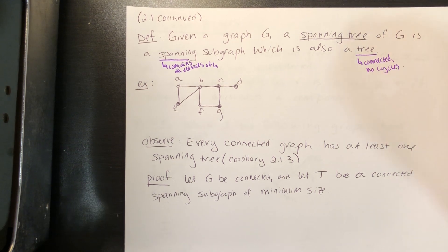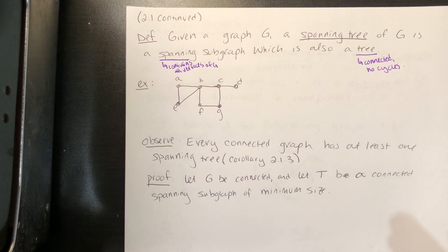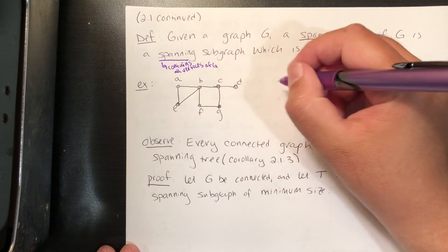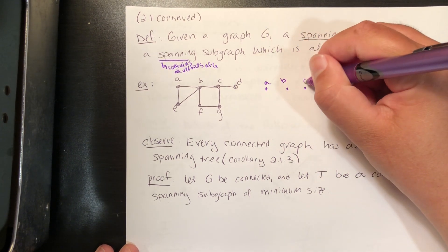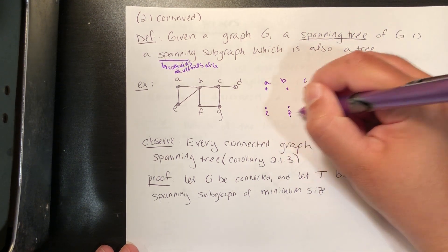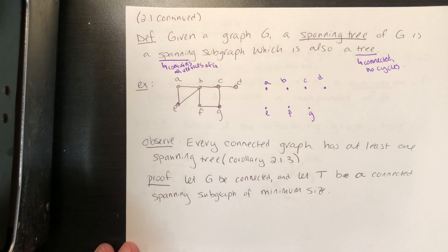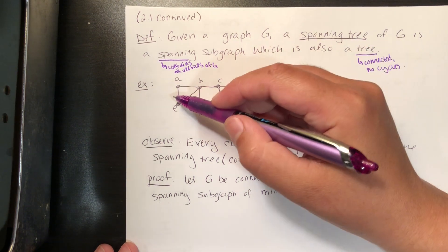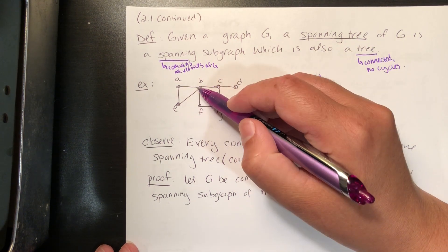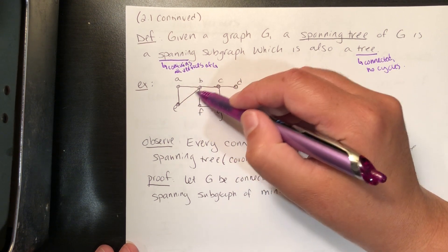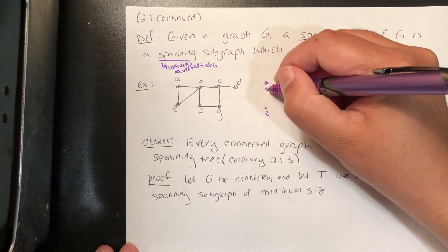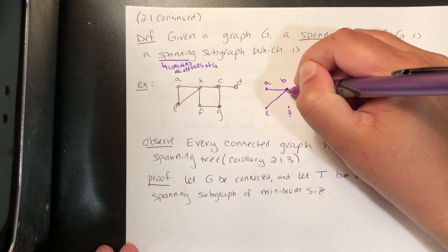As an example, consider this graph. There are lots of different spanning trees of this particular graph. We want to make sure we have all the original vertices a, b, c, d, e, f, and g, and then choose just some of the edges so that the resulting graph is a tree — connected and containing no cycles. For instance, you could choose edges ae and eb, or ae and ab, but you can't choose all three because that would form a cycle. So let's choose ab and be.